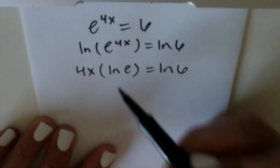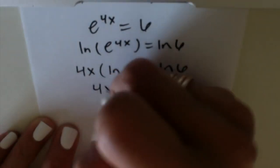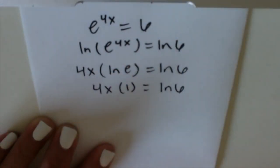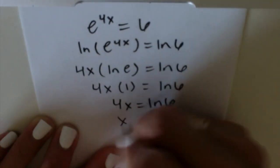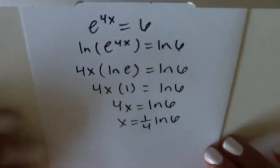Just like the previous problems, you have ln(e) = 1. So now we have 4x = ln(6). We'll divide both sides by 4. And let's also get that decimal value.